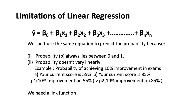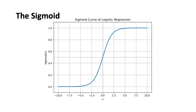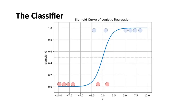We actually need a link function — a function that is not a line and is always confined between 0 and 1. The answer comes in the form of the sigmoid function. In calculus, a sigmoid function always lies between 0 and 1 no matter what the value of x is, and it is non-linear. How would it act as a classifier? Let's understand that.